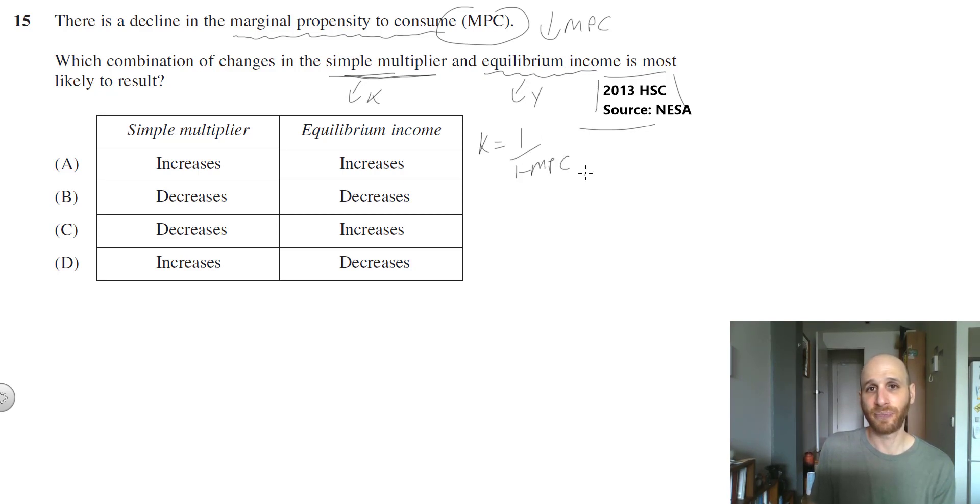If we're thinking about the key formulas, I know that the multiplier equals 1 over 1 minus MPC. And I also know that the change in equilibrium income equals the multiplier times the change in the component of aggregate demand. I sometimes have trouble understanding the theory without using numbers, so what if we used actual numbers? Let's say that in the first situation MPC used to be 0.6, and then now MPC will equal 0.3.